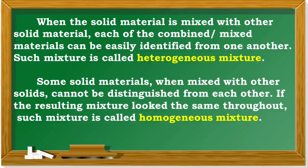Such a mixture is called a heterogeneous mixture. Some solid materials, when mixed with other solids, cannot be distinguished from each other. If the resulting mixture looks the same throughout, such a mixture is called a homogeneous mixture.